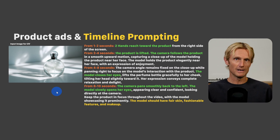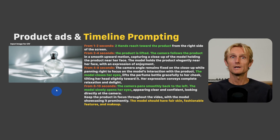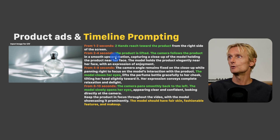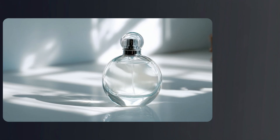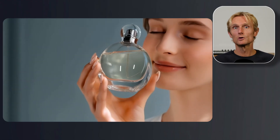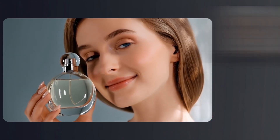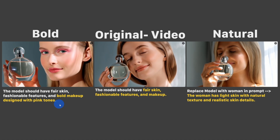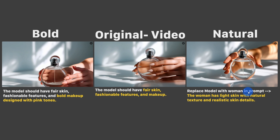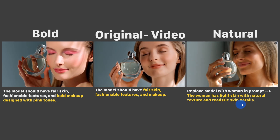For product ads and timeline prompting, any product image can be used with timeline prompting to have a model or character promote it. Using a base product image, the timeline prompt specified: for the first two seconds, two hands reach toward the product; then the product is lifted and the camera follows; then the model closes her eyes; then the camera pans smoothly back to the left as the model slowly opens her eyes. The model was described as having fair skin, fashionable features, and makeup. The final video looks very consistent, the woman looks like a real model, and even the liquid in the perfume bottle moves naturally. For bolder looks, use 'bold makeup designed with pink tones'; for a more natural look, replace 'model' with 'woman' and use 'light skin with natural texture and realistic skin details.'